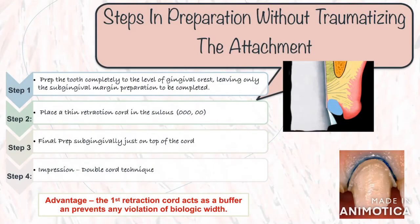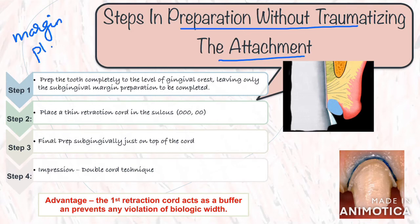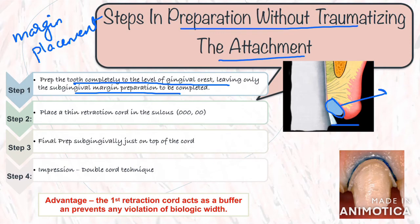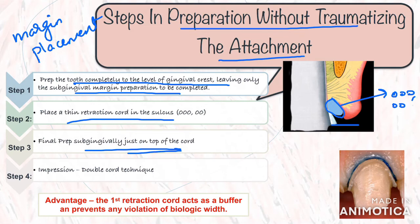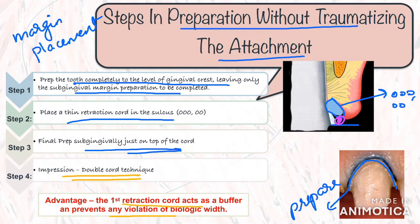The easiest and most predictable technique for margin placement without traumatizing the gingiva is as follows. First, evaluate the sulcus depth. Prepare the tooth completely with the margin placed at the level of the gingival crest. Next, take a thin retraction cord — probably triple zero or double zero — and pack the sulcus with this cord. Then prepare sub-gingivally, staying right on top of the cord already packed; the cord acts as a buffer keeping tissues away from the bur. Before the impression, place a larger diameter cord just above the first one and remove it just before taking the impression. For cases with deep sulcus depth, follow the same procedure but pack two retraction cords followed by the final sub-gingival preparation and a third cord just before the impression.